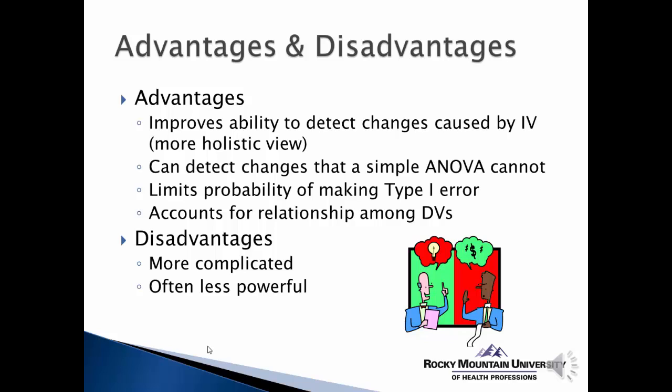MANOVA also helps account for the interrelationship among the dependent variables. There might be a greater or lesser effect on one outcome, or some kind of combination effect. The disadvantage is that this is a much more complicated analysis, with multiple steps involved in determining the effect on multiple outcomes — even more so with multiple independent variables and potential covariates. Additionally, because of the greater number of variables, the analysis might be less powerful. In other words, there could be a slightly greater chance of a Type 2 error — accepting the null hypothesis when in reality there may be a true effect, due to the complexity of the analysis.